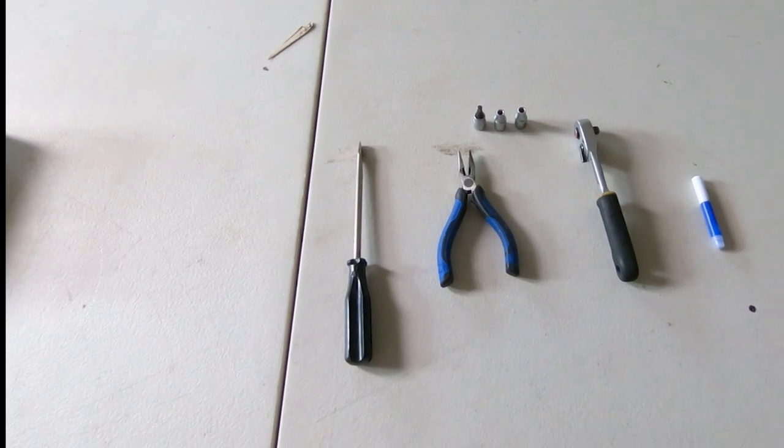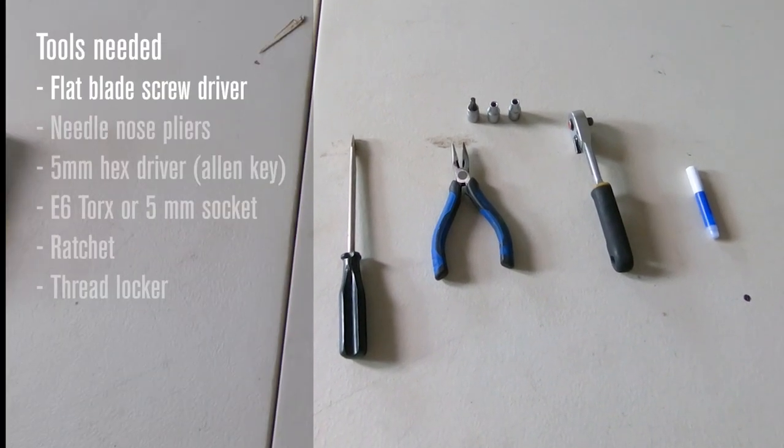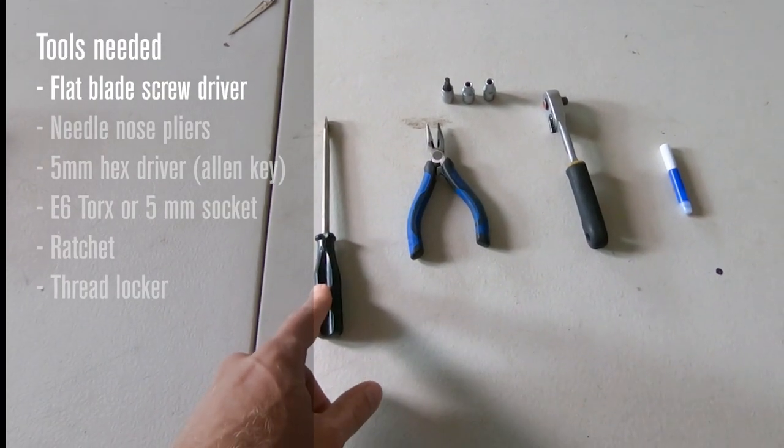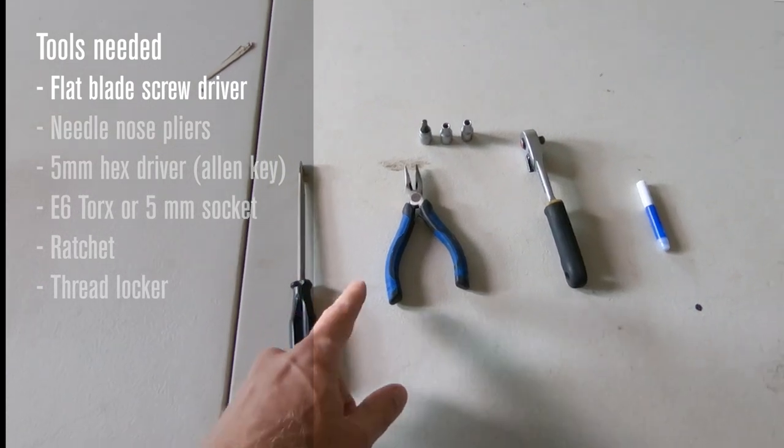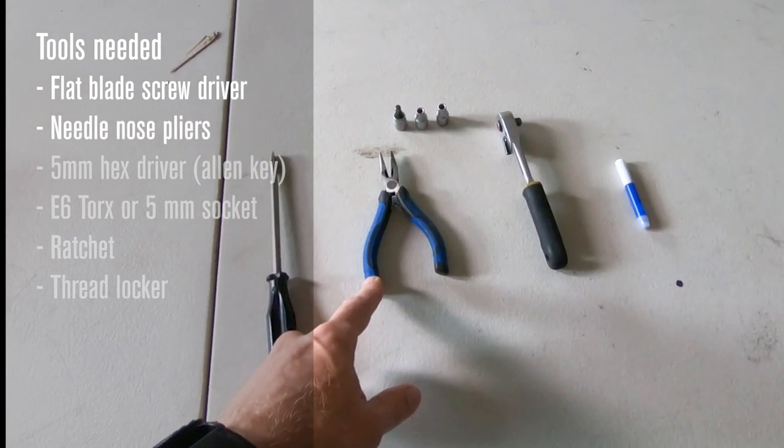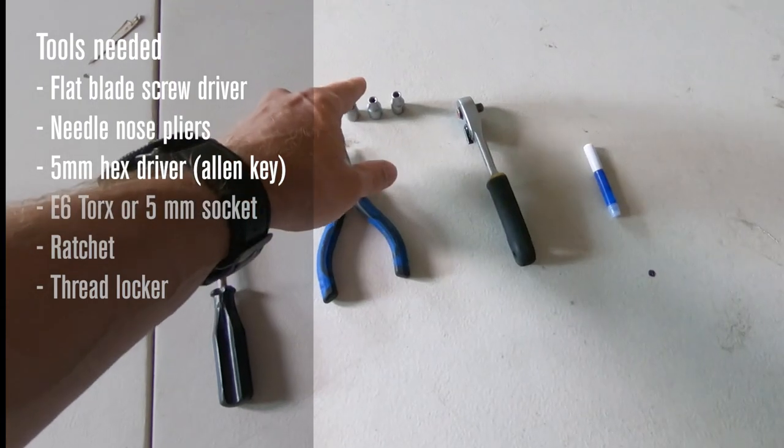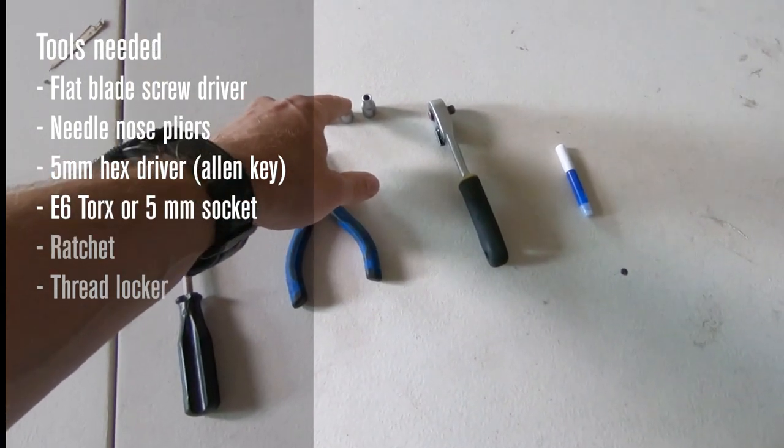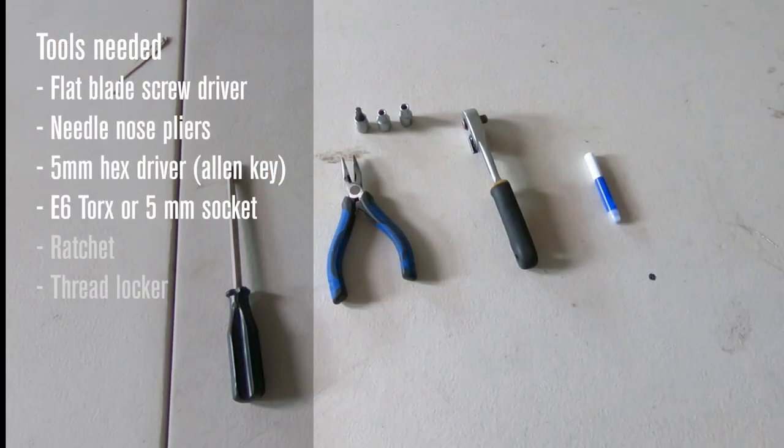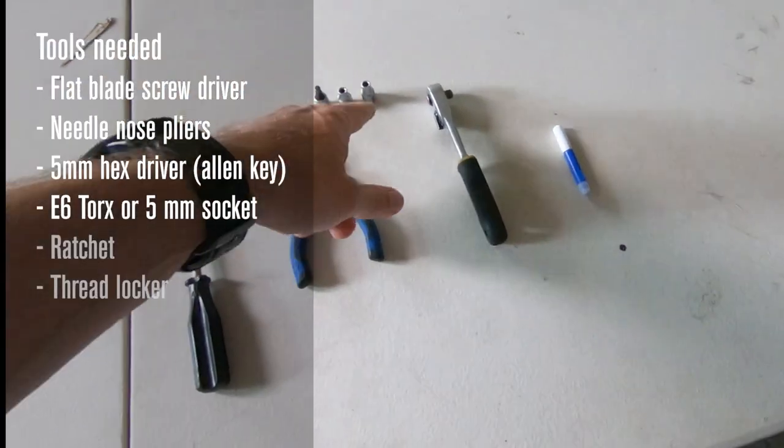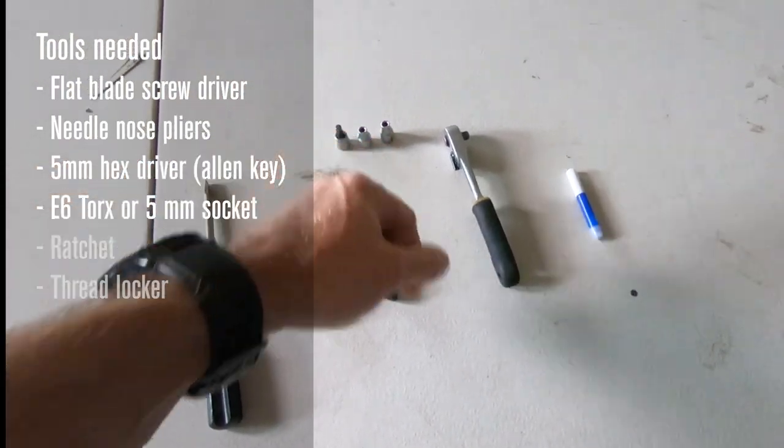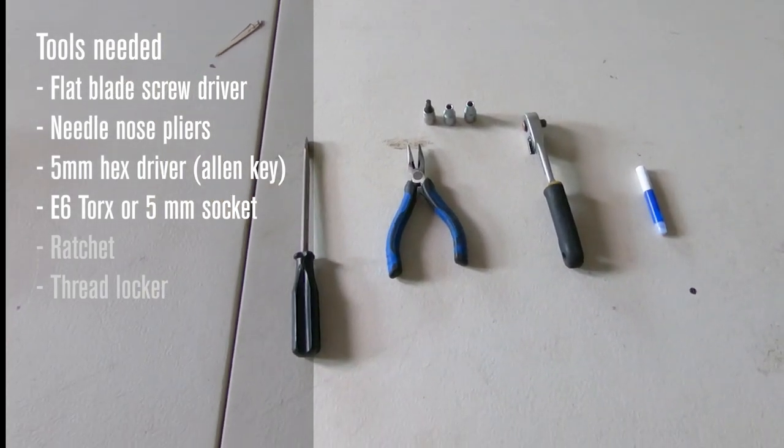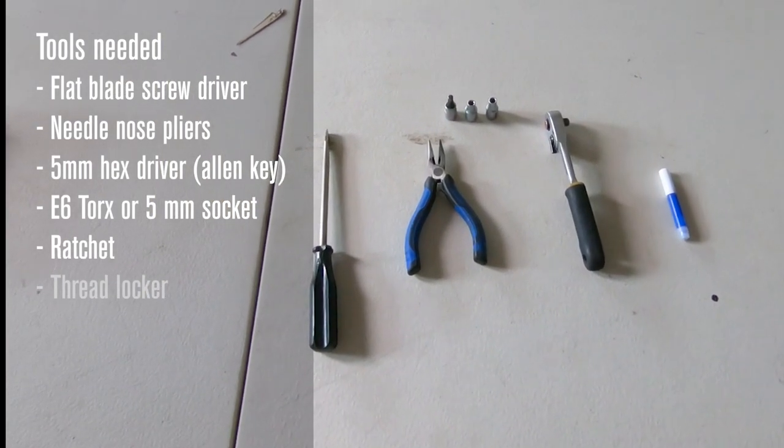This is a simple install and we'll only need a few tools. You'll need a flat blade screwdriver to remove the e-clip from the foot peg pin. You'll need needle nose pliers to put the e-clip back on, a 5-millimeter hex wrench, an external T6 Torx. If you don't have an external T6 Torx, a 5-millimeter socket will work. This is to drive in the custom cleat screws into the foot pegs. You also want a ratchet and you'll definitely want some thread locker.